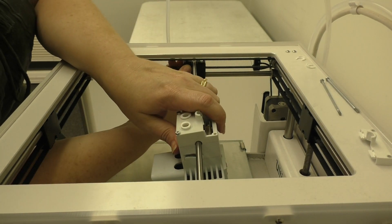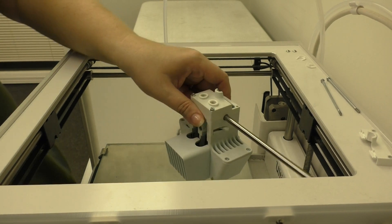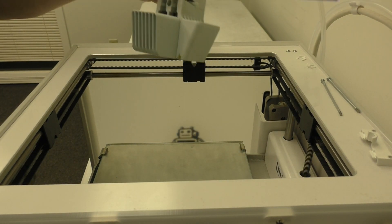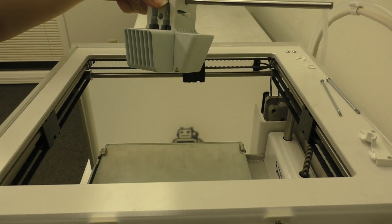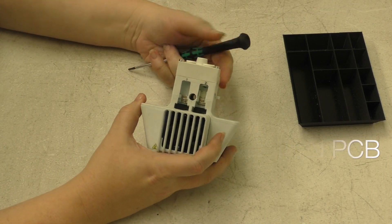Next, you're going to do the same process on the left and right sliding blocks. Go ahead and turn the print head slightly diagonal to pull it off. Now we're going to remove the print head PCB from the print head.